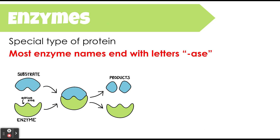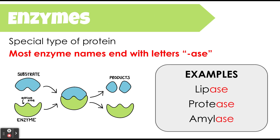Enzymes are special proteins. A little bit of terminology: most enzyme names end with the letters A-S-E. For example, lipase — the ending A-S-E tells us it's an enzyme. The beginning L-I-P looks a lot like lipid, so a lipase enzyme specifically is going to act on lipids.